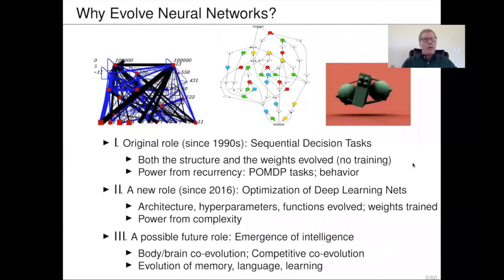But supervised learning does not cover all situations where neural networks might be useful. Since the 1990s, it became clear that there were many domains where gradients didn't really exist and we didn't have targets from which to backpropagate. That's where the original role for neuro-evolution came from — sequential decision tasks where both the structure and the weights of the neural networks were evolved at the same time, with no backpropagation at all. We could evolve strongly recurrent neural networks and use them in POMDP domains where we had to take lots of history into account to make good decisions.